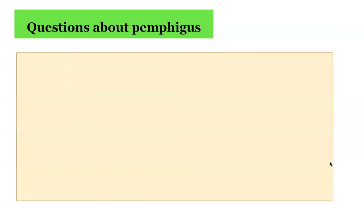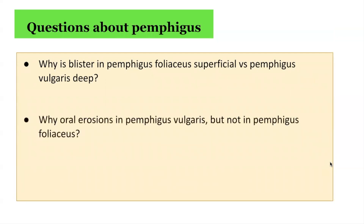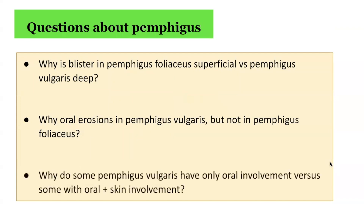So what are some questions about the different forms of pemphigus? These include: why is the blister in pemphigus foliaceus superficial compared with pemphigus vulgaris, which tends to be deeper? Why are oral lesions present in pemphigus vulgaris but not in pemphigus foliaceus? And why do some pemphigus vulgaris patients only have oral involvement, whereas others have both oral and skin involvement?